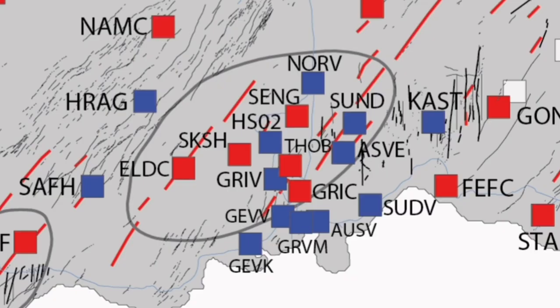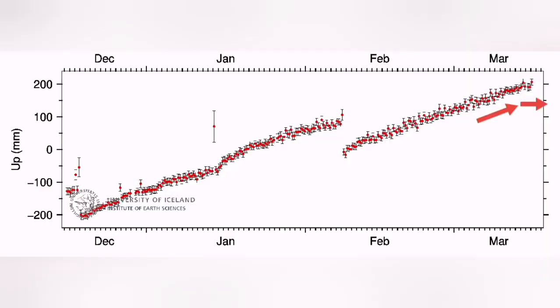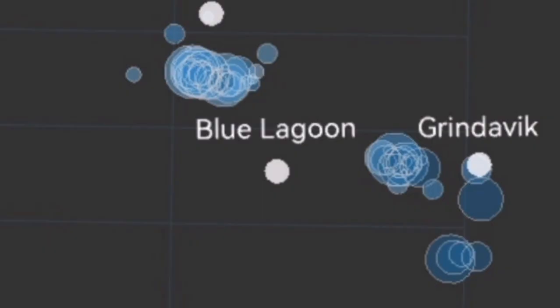The Svartsengi volcanic system has erupted three times already. We are seeing the Svartsengi itself, the land uplift has been reduced slightly, then again a little bit rising. But most of the trend was that it didn't rise as fast as previously, so we show it by the minus sign.